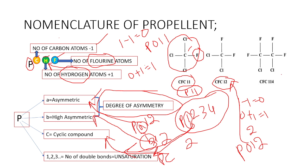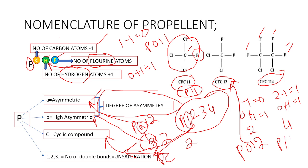For Propellant 114: number of carbon atoms is two, minus one equals one. Number of hydrogen atoms is zero, plus one equals one. Number of fluorines: counting the fluorine atoms gives four. Hence we can write Propellant 114, or chlorofluorocarbon 114. This is the basic or simple nomenclature of propellants used in aerosol technology.